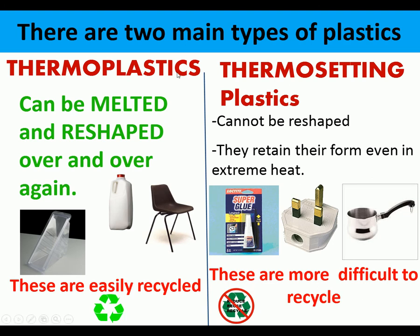There are two main types of plastics. There are thermoplastics, which can be melted and reshaped over and over. These are easily recycled. There are also thermosetting plastics. These cannot be — or are very difficult to — reshape, and they retain their form even in extreme heat. These are much more difficult to recycle.